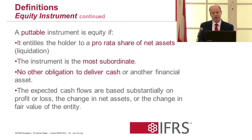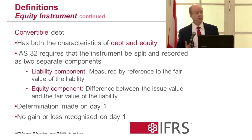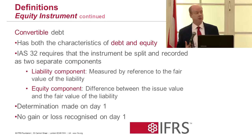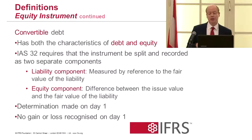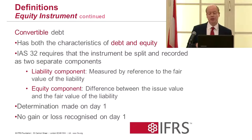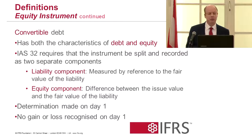Considering convertible debt: here's a bond where there is a right of conversion into equity, so it has both the characteristics of debt as well as equity. IAS 32 requires that the instrument be split and recorded as two separate components — a liability component, measured by reference to the fair value of the liability, and an equity component, which is the difference between the issued value and the fair value of that liability. That determination is made on day one, with no gain or loss recognised on day one.